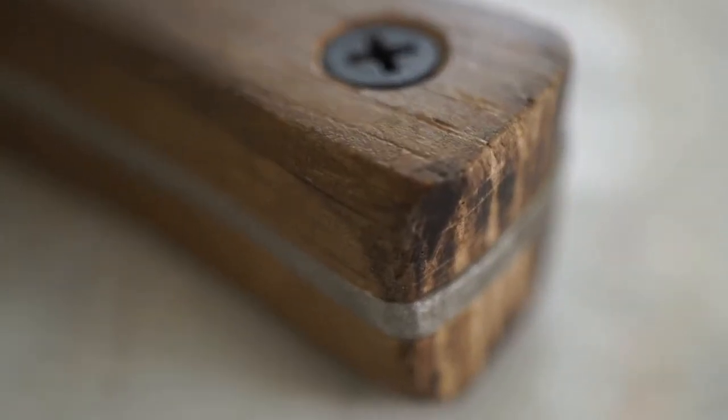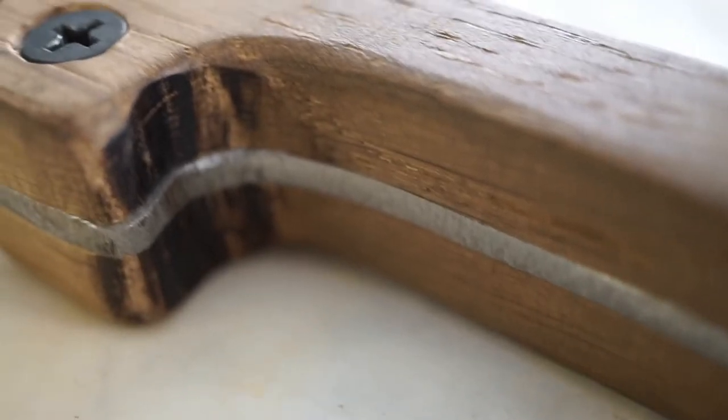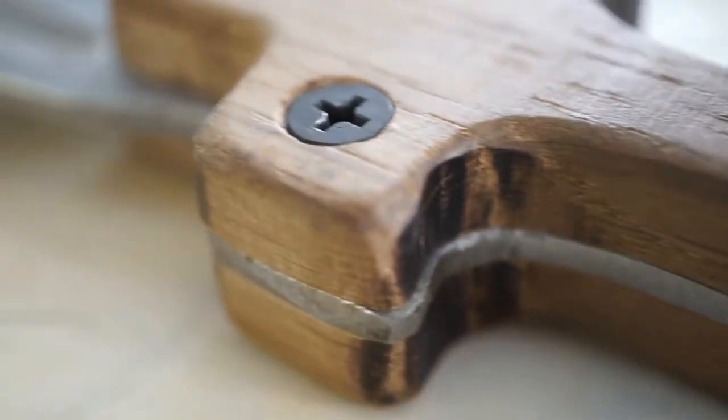Then I cut a piece of oak in half, put that on the handle, clamped it on, and ground it down with a flap disc on an angle grinder to match the handle shape of the underlying metal.